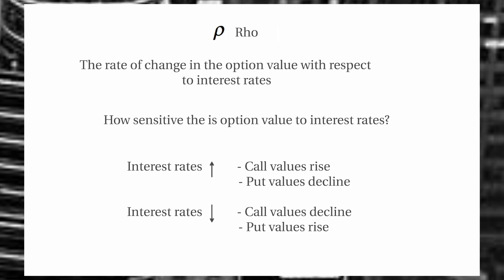Next is rho. Another component of our Black-Scholes model is the risk-free rate, so interest rates are part of the relationship with our option value. As interest rates increase, we'll have a rise in call values and a decline in put values. When interest rates decline, we'll have just the opposite — call values decline and put values rise. This is not a very strong relationship, so it will take a very significant change in interest rates to have a significant effect on our options.